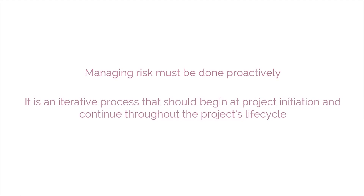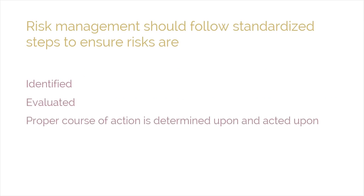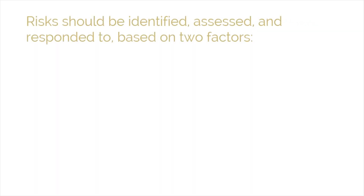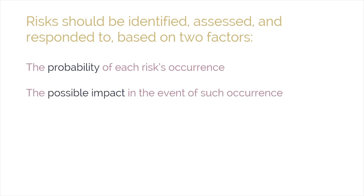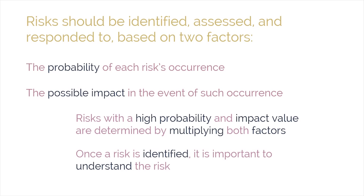Managing risk must be done proactively. It is an iterative process that should begin at project initiation and continue throughout the project's lifecycle. The process of managing risks should follow standardized steps to ensure that risks are identified, evaluated, and that a proper course of action is determined and acted upon. Risks should be assessed based on two factors: the probability of each risk's occurrence and the possible impact. Risks with high probability and impact value — determined by multiplying both factors — should be addressed before those with a lower value.